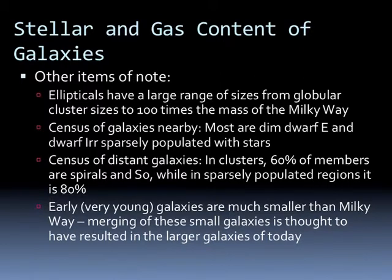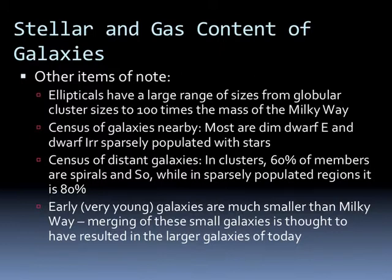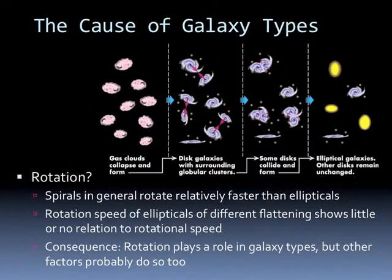Ellipticals have a large range in sizes, from globular cluster sizes to 100 times the mass of the Milky Way. A census of nearby galaxies shows most are dim dwarf galaxies and dwarf irregular galaxies, sparsely populated with stars. In a census of distant galaxies in clusters, 60% of members are spirals and S0s, while in sparsely populated regions it might be up to 80%. When early or very young galaxies are much smaller than the Milky Way, the merging of these galaxies is thought to have resulted in the larger galaxies of today.